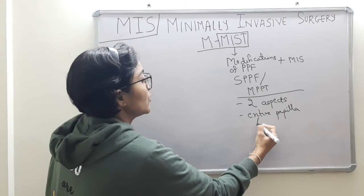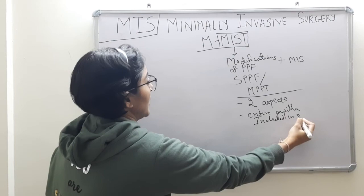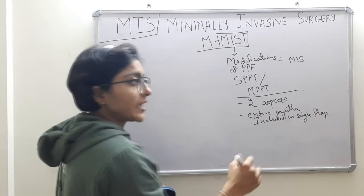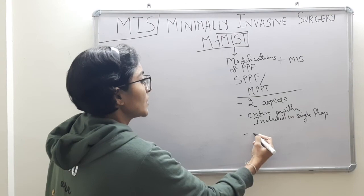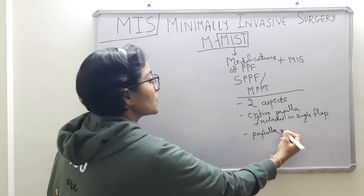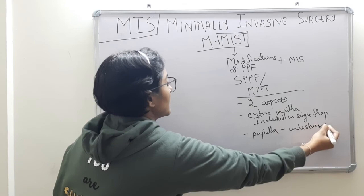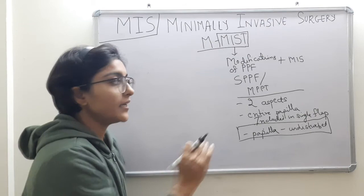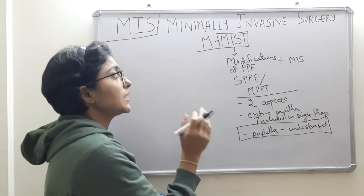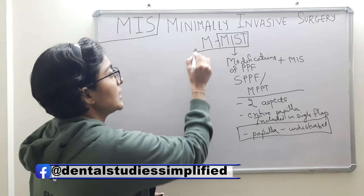That is, the entire papilla is included in a single flap. Another technique, as discussed in the previous video, is the single flap approach by Trombelli, where the papilla is preserved 100% — undisturbed, undetached, kept intact. This is what is followed in Modified Minimally Invasive Surgical Technique. MMIST is similar to single flap approach by Trombelli but has a few differences.